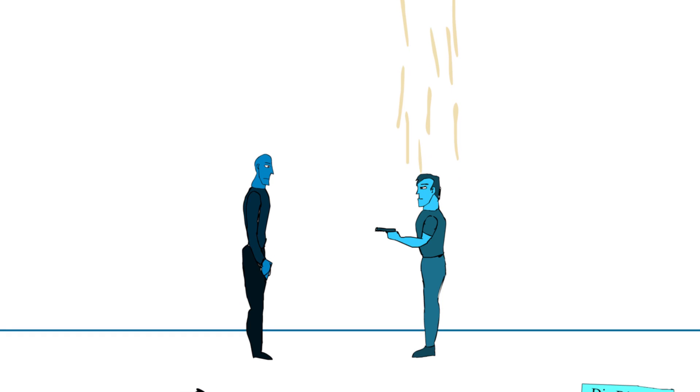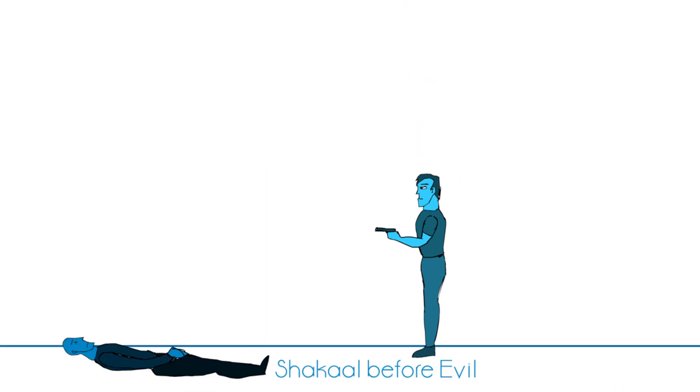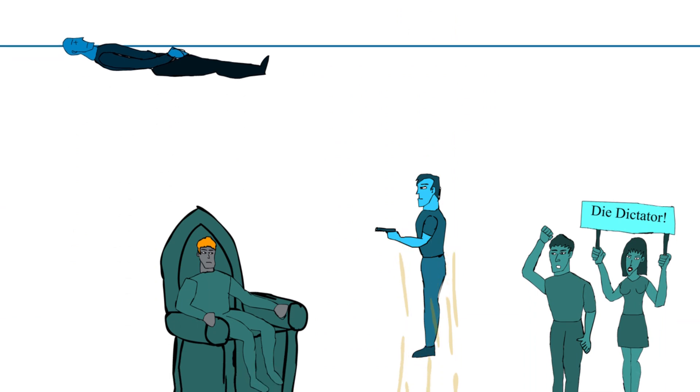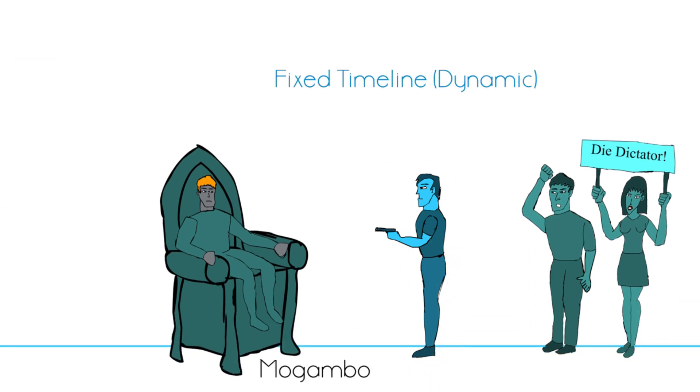The third type is fixed universe time travel. Here, nothing changes as a result of the hero's actions. The hero goes to the past and kills the dictator, and returns to his world to see that some other dictator has replaced the dead dictator and nothing has changed.